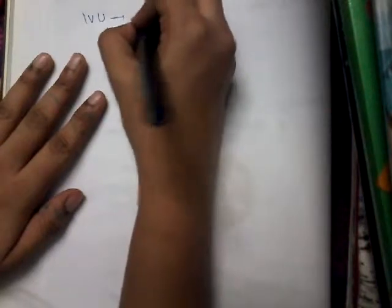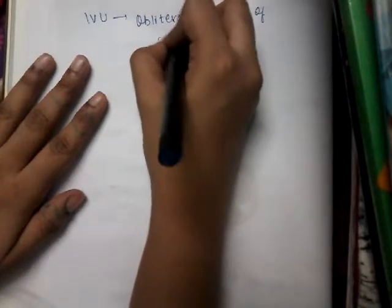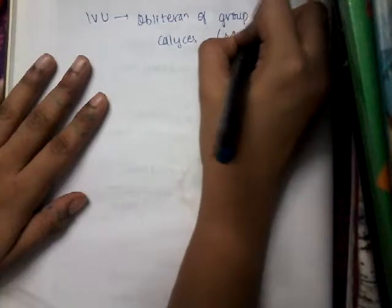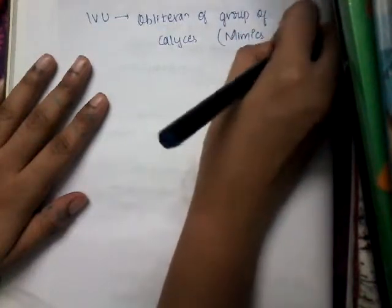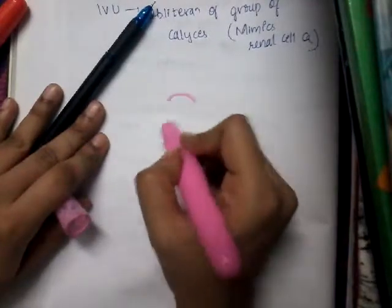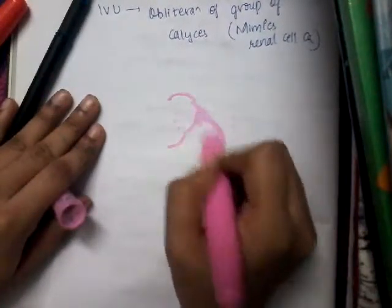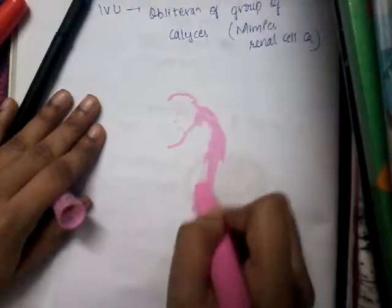On doing an intravenous urogram, you see obliteration of a group of calyces. This mimics renal cell carcinoma on IVU. The obliterated calyces are not commonly seen, and the ureter is seen normally.